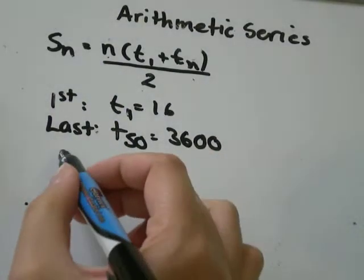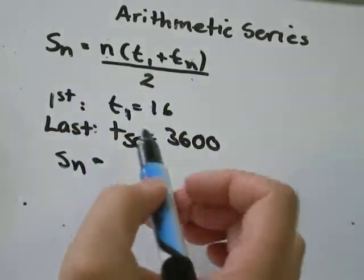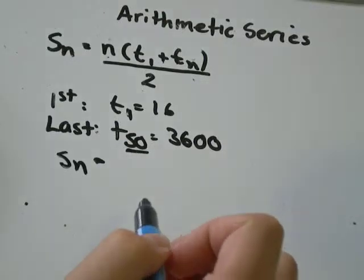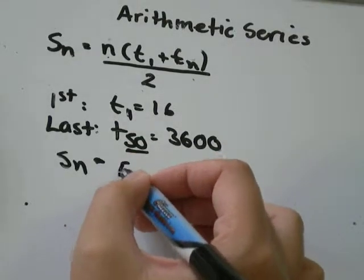So I'll show you how it works. Sn is what we're solving for. n, the number of terms, you just need to look at the term number of the last term. So in this case it's 50, so there's 50 terms in this series.